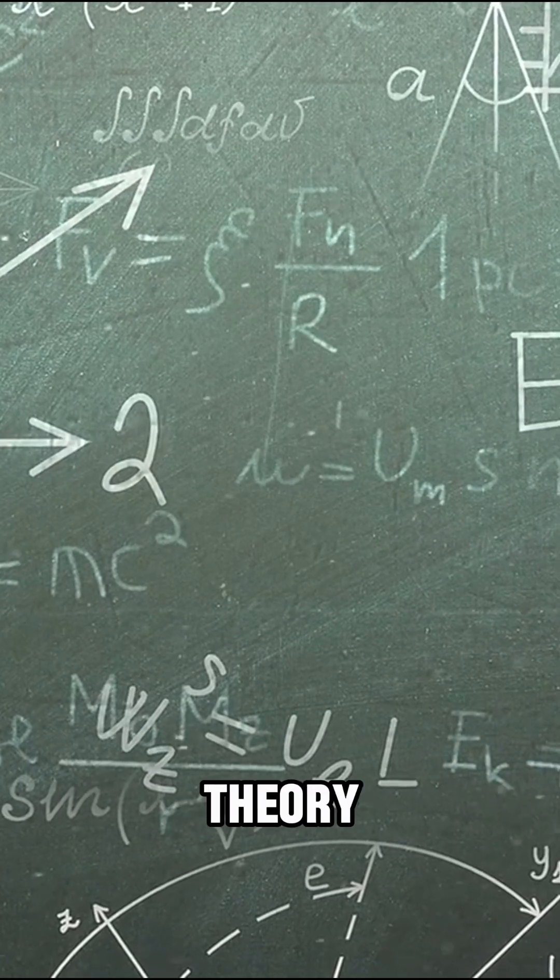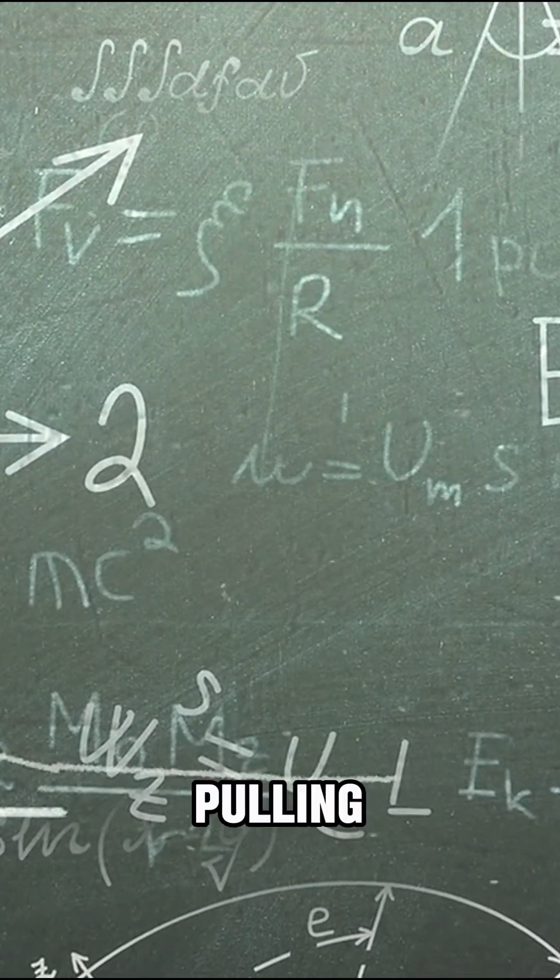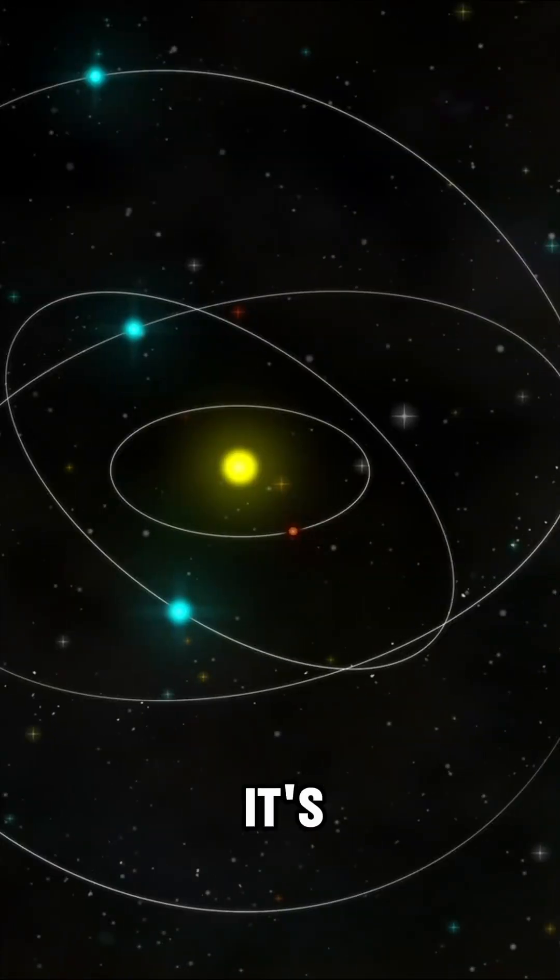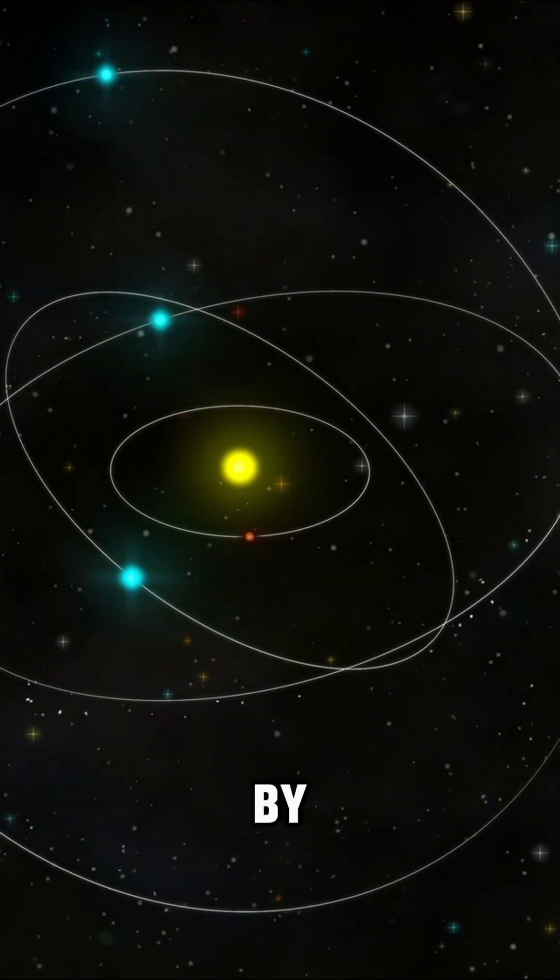According to Einstein's theory of general relativity, gravity isn't just a force pulling objects together. It's the curvature of spacetime caused by mass and energy.